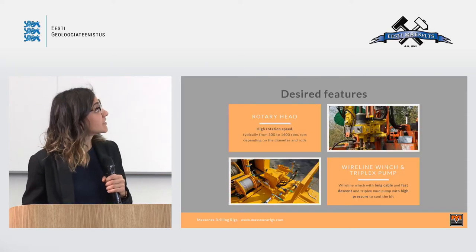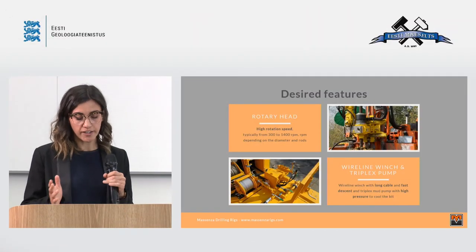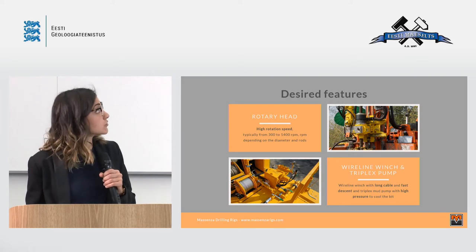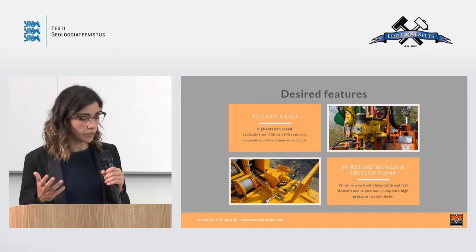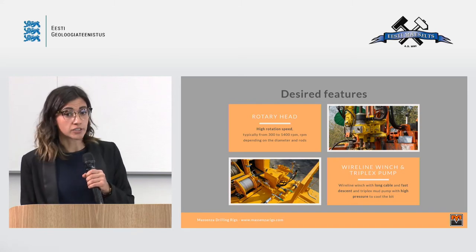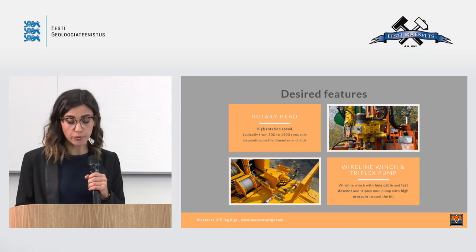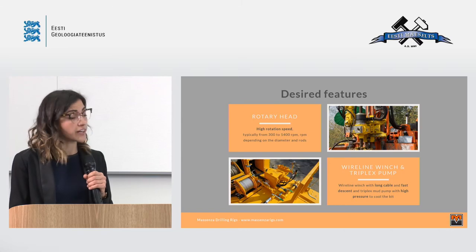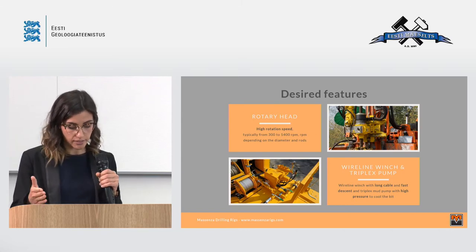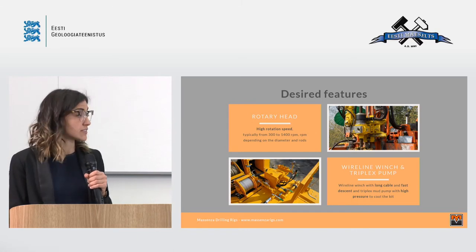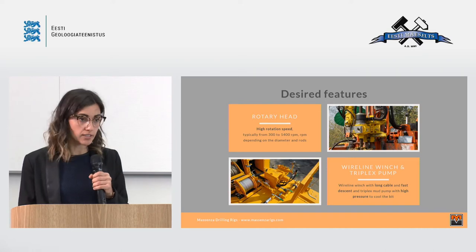The costs remain a little bit high, though. For what concerns the drilling rig itself, in this case we need a rotary head with very high rotation speed, which varies depending on the diameter of the rods used. It can go from 300 RPM, for example when using the Geobore-S system, up to 1,400 RPM when drilling with NQ rods. The rig should then be equipped with a wireline winch with a long cable — at least the same length as the depth to be reached — and also a fast descent to increase productivity. The rig should also be equipped with a triplex pump with high pressure to cool the bit.